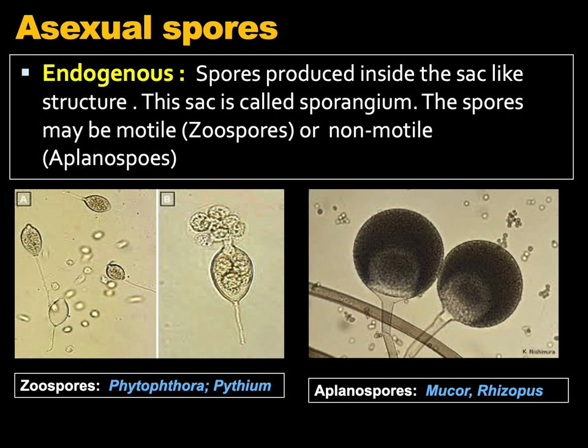Asexual spores may be endogenous — produced inside sac-like structures called sporangia. The spores may be motile, like zoospores, or non-motile, called aplanospores. Zoospores are generally produced by lower fungi like Pythium and Phytophthora. Aplanospores are generally produced by organisms like Mucor and Rhizopus.